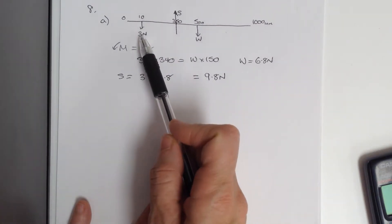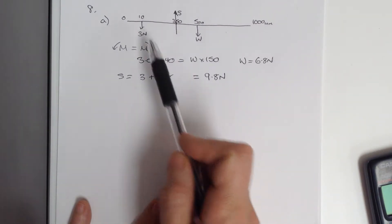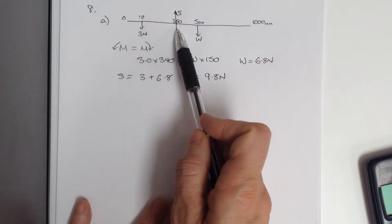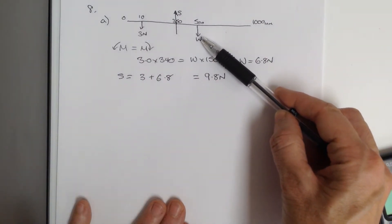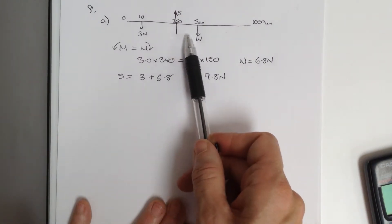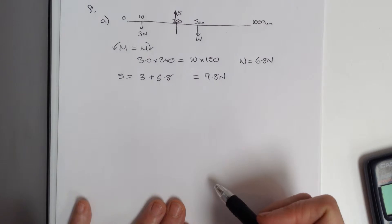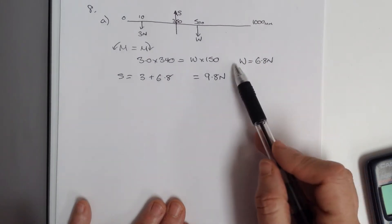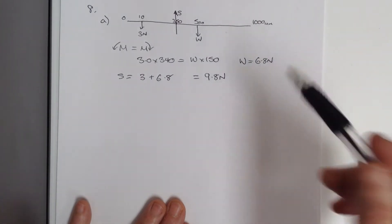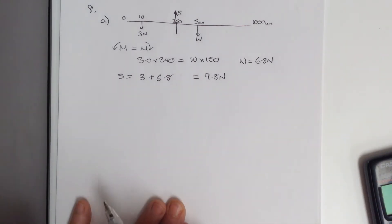Which is the 3 newtons times 340, because that must be the distance across there, will be equal to the weight of the rule multiplied by 150, which is the distance from the knife edge. That being the case, we come up with the weight equal to 6.8 newtons.